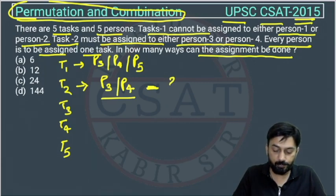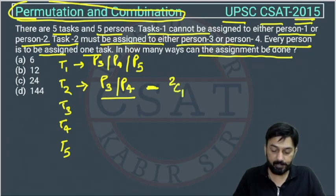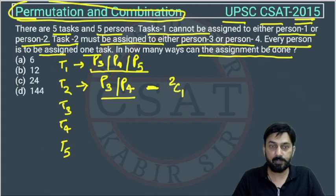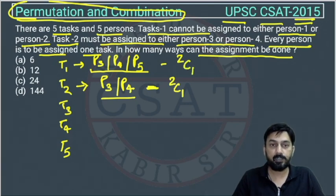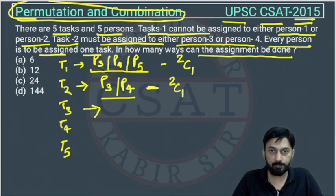We are assigning out of two people, one person will be selected for T2 — that is 2C1. Now, among P3, P4, and P5 we have three people, but one is already assigned to T2, so we are remaining with two people for T1. Out of these two, we select one — that is 2C1. For T3, two people have already been consumed, so we are remaining with three people and any one can come here — that is 3C1.